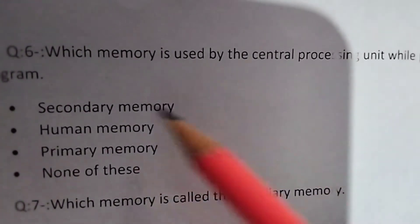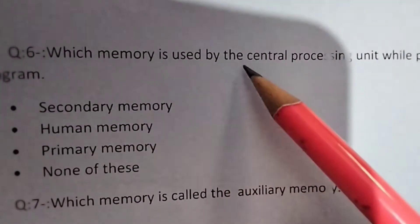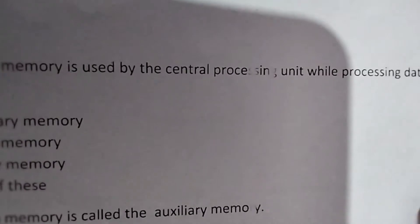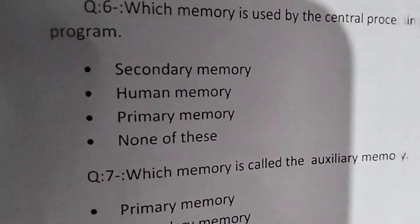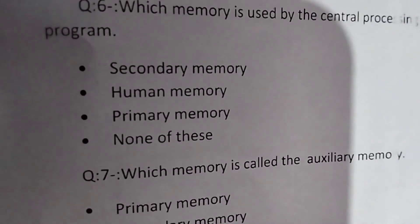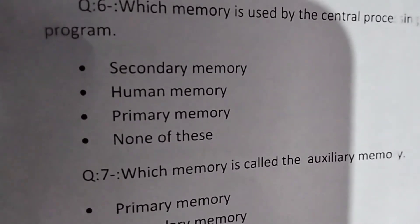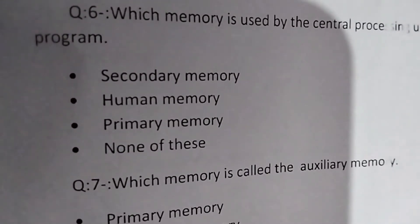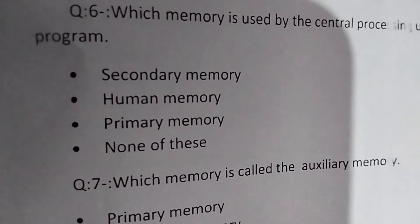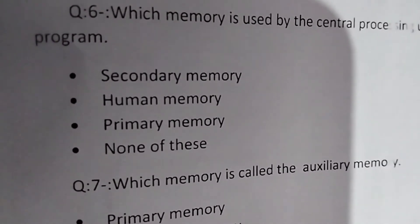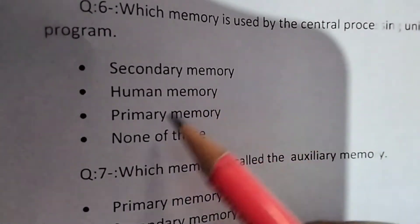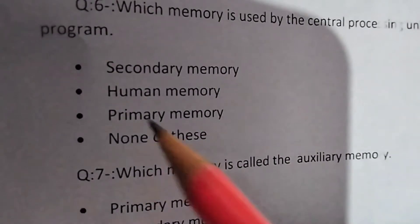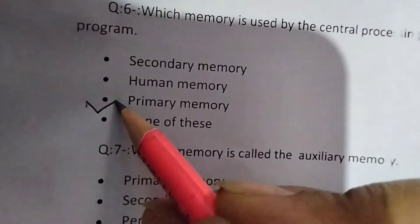Next question is: Which memory is used by the central processing unit while processing data and executing program? Which memory is used by the central processing data and executing program? Secondary memory, human memory, primary memory or none of these. So answer is primary memory.